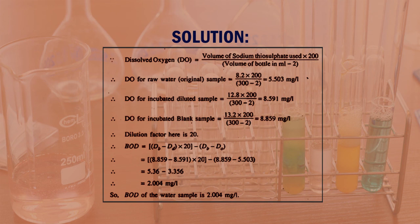DO for the incubated diluted sample: 12.8 into 200 divided by (300 minus 2) equals 8.591 mg per liter. DO for the incubated blank sample: 13.2 into 200 divided by (300 minus 2) equals 8.859 mg per liter. With a dilution factor of 20, BOD equals [(8.859 minus 8.591) multiplied by 20] minus [8.859 minus 5.503], giving an answer of 2.004 mg per liter. Therefore, the BOD of the water sample is 2.004 mg per liter.